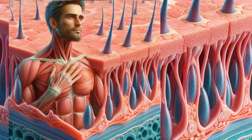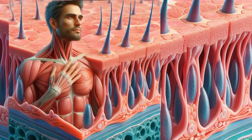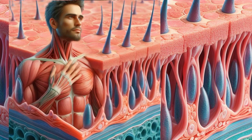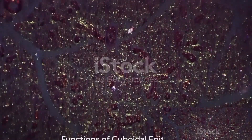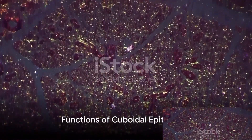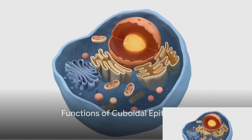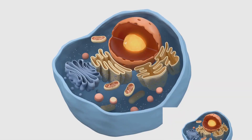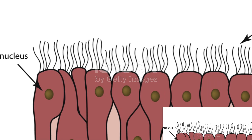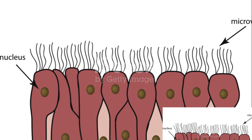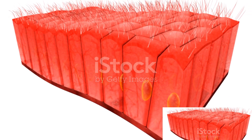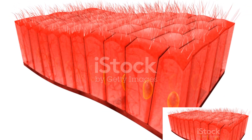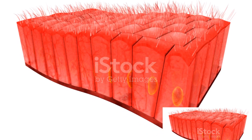They form a unique layer that lines various parts of our body, including the salivary glands and kidney tubules. Their primary function is providing mechanical support. Just as the walls of a building provide structural integrity, cuboidal epithelium lends support to the tissues and organs they line.